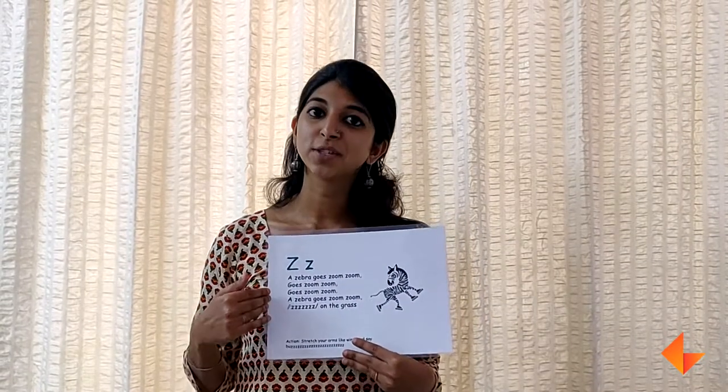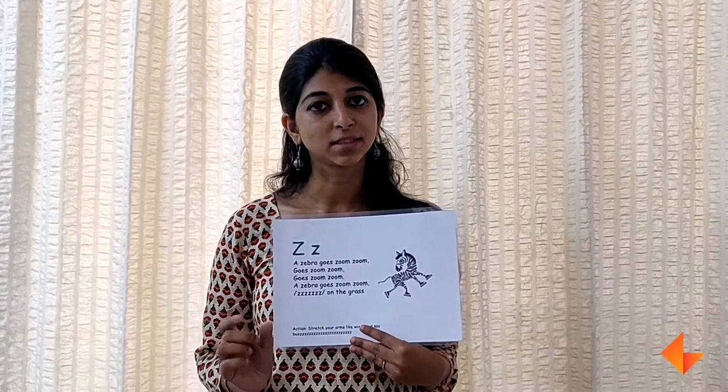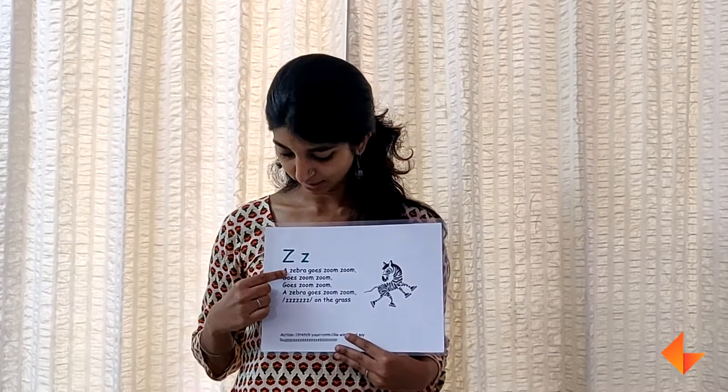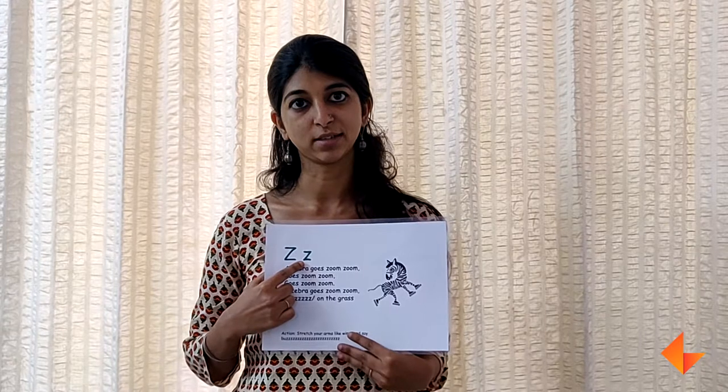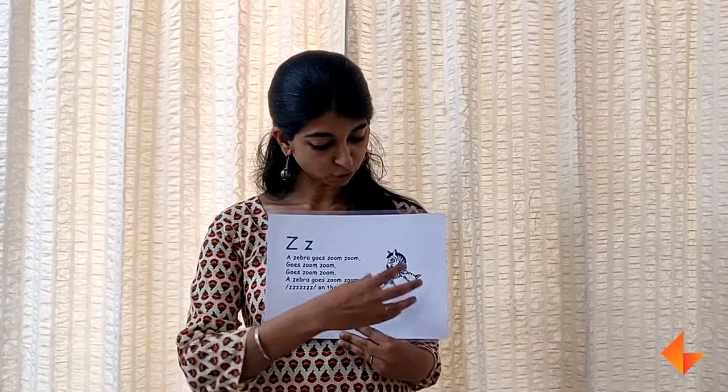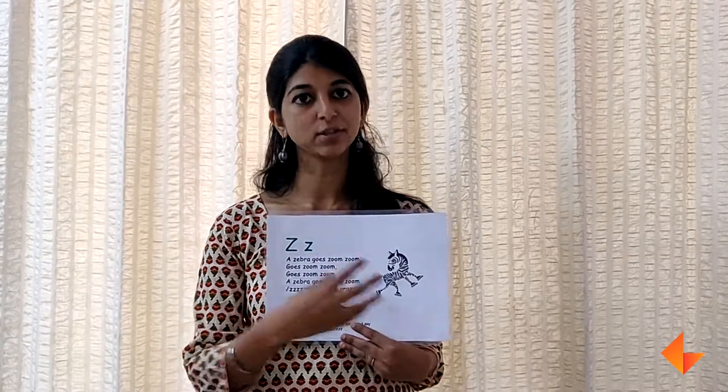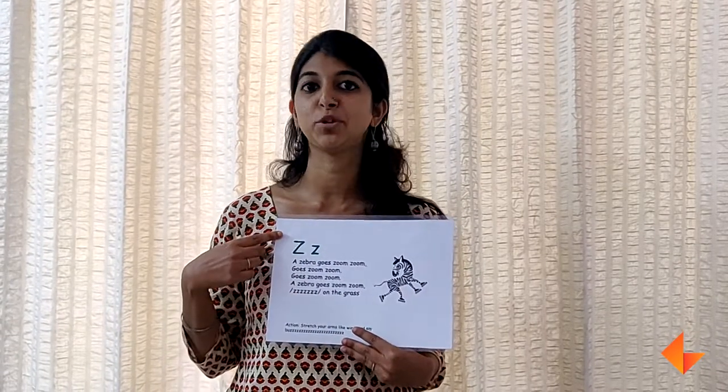Once you have sung the song two to three times, ask children which sound did they hear. They heard the Z sound. The Z sound is made by the letter Z. This is capital Z and this is small Z. After you talk about the picture, sing the song and help children identify the letter.